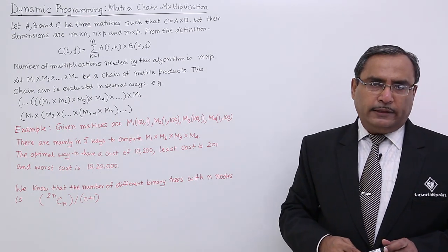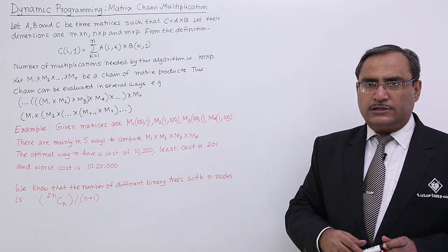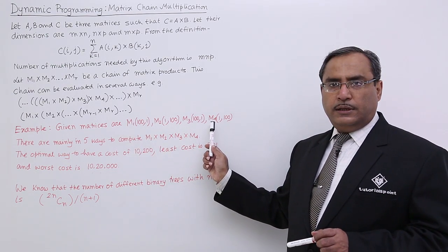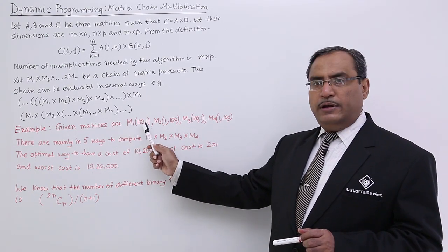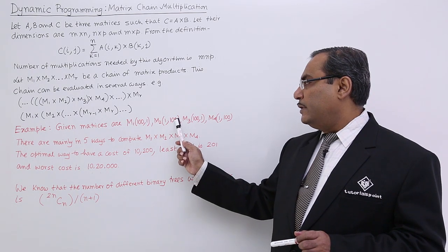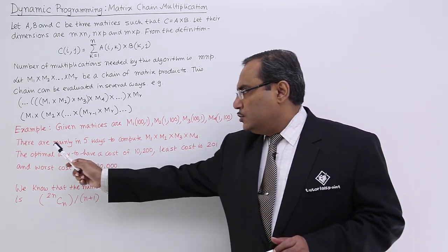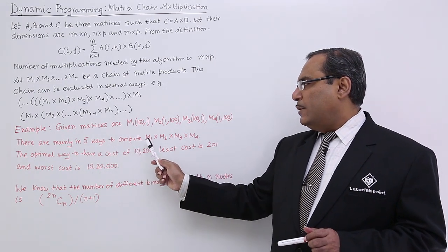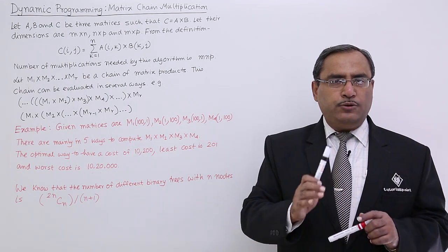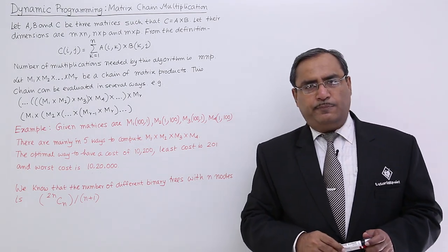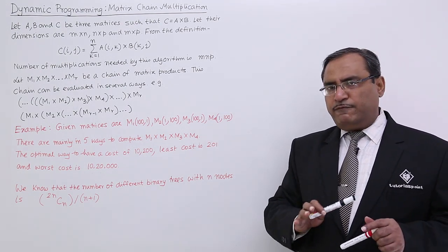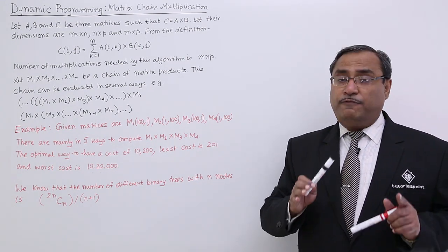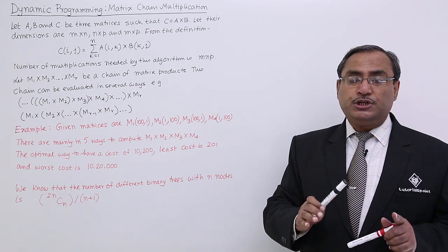Let us take an example. Given matrices are M1, M2, M3, M4 with sizes 100×1, 1×100, 100×1, and 1×100 respectively. There are mainly 5 different ways to compute M1 × M2 × M3 × M4, and these 5 different ways yield different computational complexities.